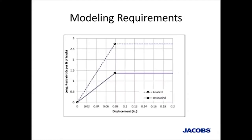This graph represents longitudinal stiffness. There's a linear range which then yields at about 0.08 inches of displacement. The vertical axis units are in kips per foot of track, based on a standard 27-inch tie spacing, so it needs to be scaled up or down based on your actual tie spacing — not to be confused with the nodal spacing in your model. For our structures, we can assume the standard 27-inch spacing will be used.